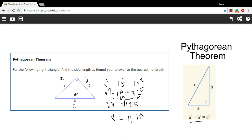So that is how to use the Pythagorean theorem to solve for a side that's not the hypotenuse.